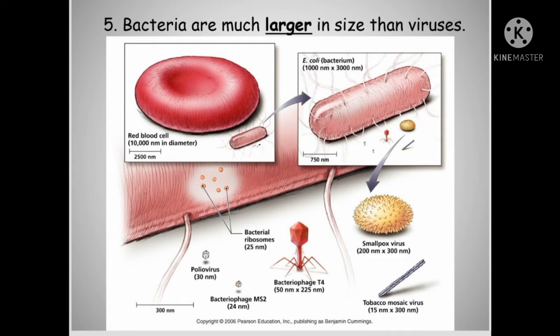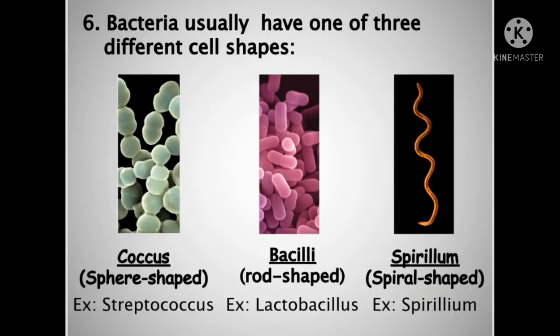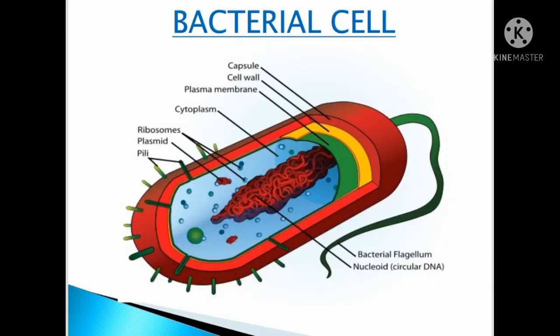Bacteria are much larger in size than viruses. Bacteria usually have one of three different cell shapes: cocci, which means sphere-shaped — an example is Streptococcus; bacilli, which means rod-shaped — an example is Lactobacillus; and spirillum, which means spiral-shaped — an example is Spirillum.